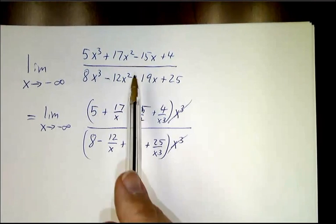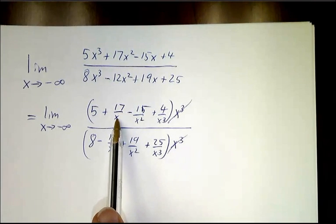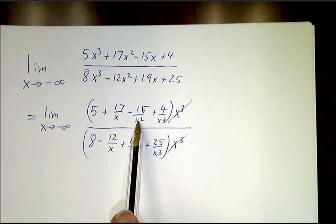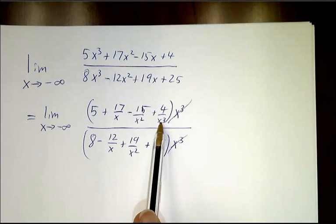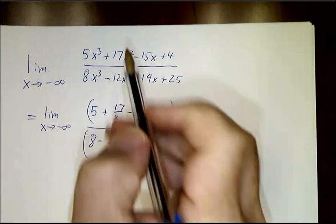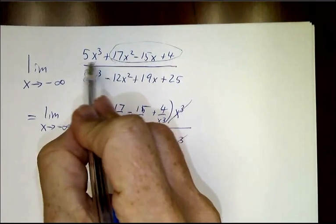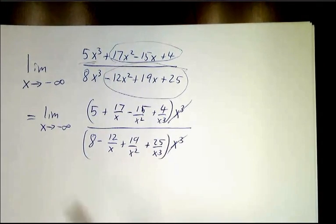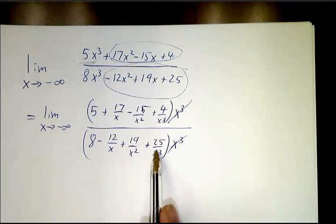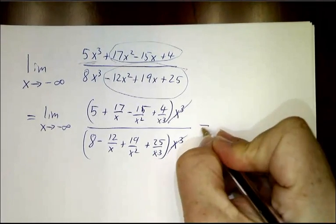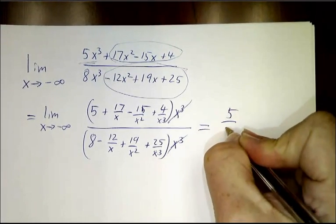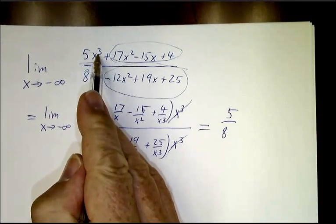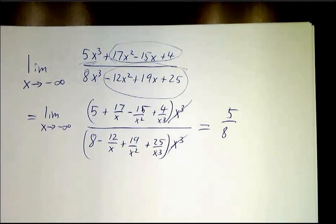Now, you notice, the 17 over x goes to 0. The 15 over x squared goes to 0. The 4 over x cubed goes to 0. All of these terms really don't matter. It's this that's driving the train. All of these terms don't matter because once you divide by x cubed, they go to 0. So, all you're left with is the coefficient of x cubed here, divided by the coefficient of x cubed here, 5 eighths.